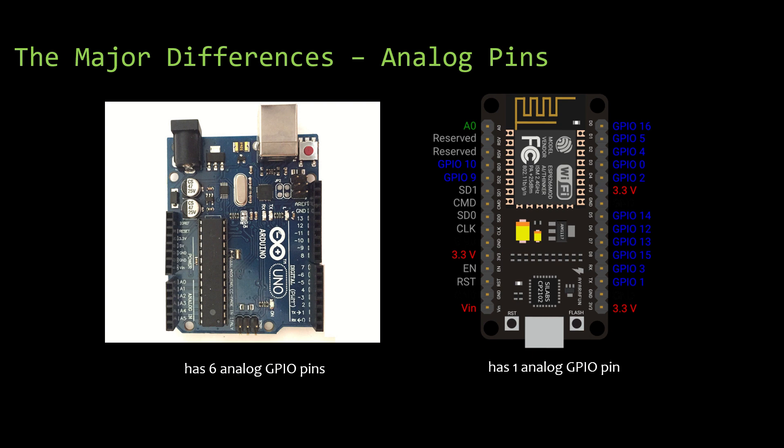Coming to the analog pins: Arduino has got six analog GPIO pins whereas NodeMCU has got only one analog GPIO pin. It is very small, hence it can support only a very limited number of analog pins.